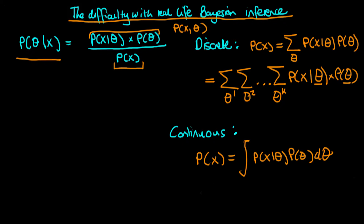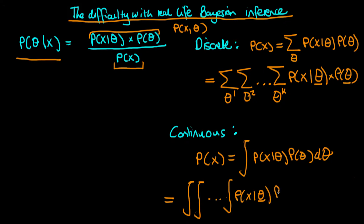Remember that in the continuous case, theta is typically a vector. So what we're really doing is integrating a number of times: P(X|theta), where theta is a vector, times P(theta), d_theta_1, d_theta_2, all the way up to d_theta_k.